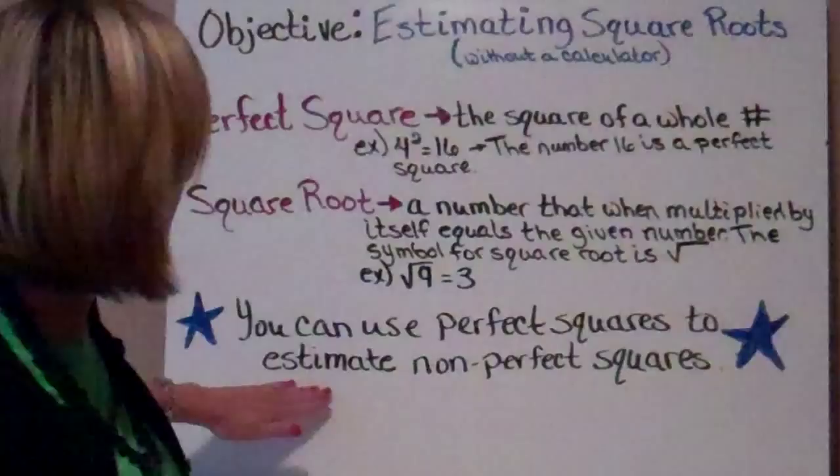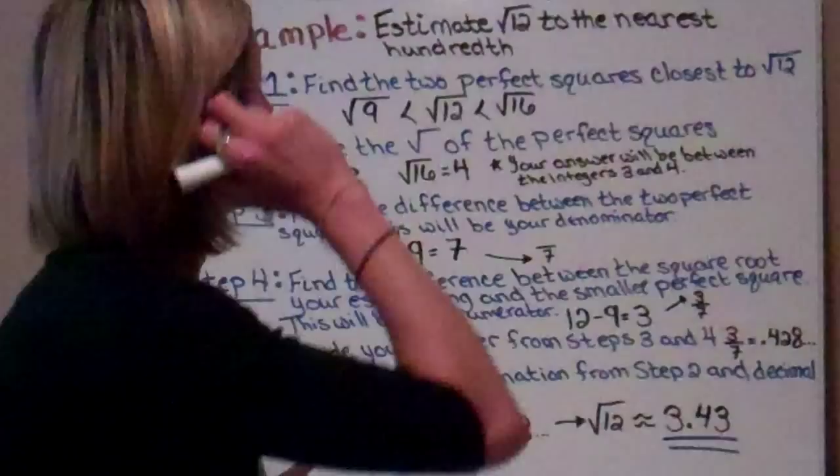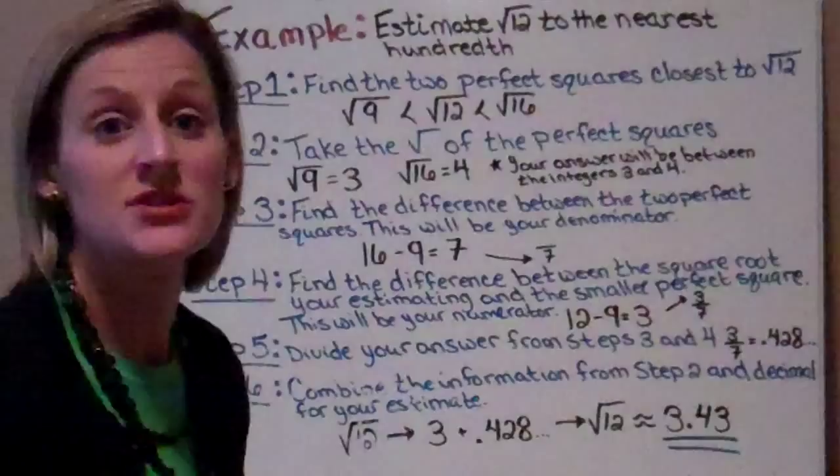You can use these perfect squares to help estimate non-perfect squares, and that's what we're going to do today. Let's look at estimating square roots. In this one, I want to estimate the square root of 12 to the nearest hundredth.